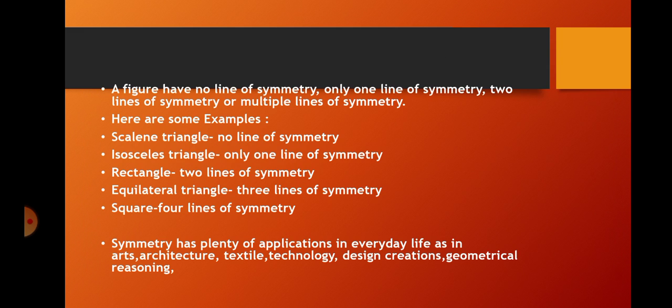So a figure may have no line of symmetry, only one line of symmetry, two lines of symmetry or multiple lines of symmetry. Here are some examples. Scalene triangle has no line of symmetry. Isosceles triangle, only one line of symmetry.